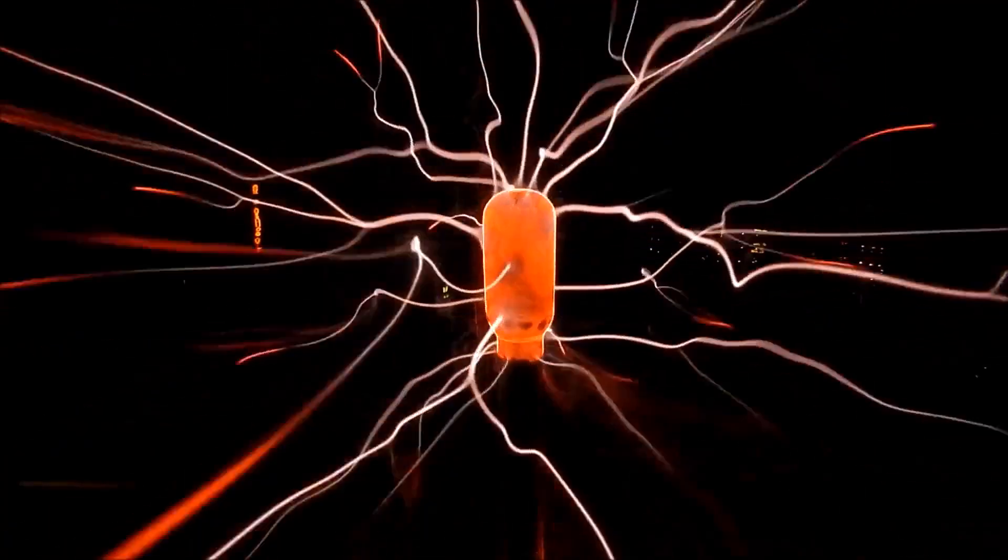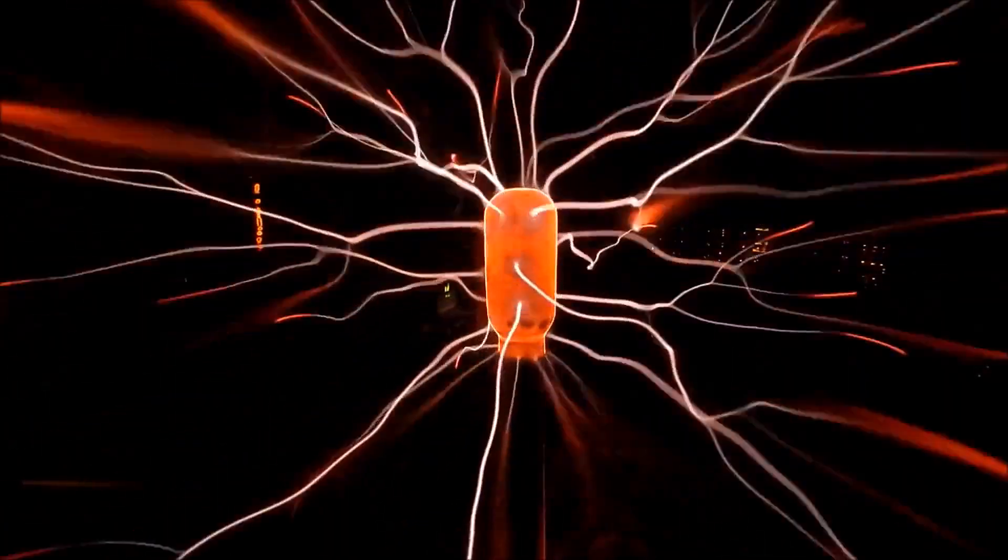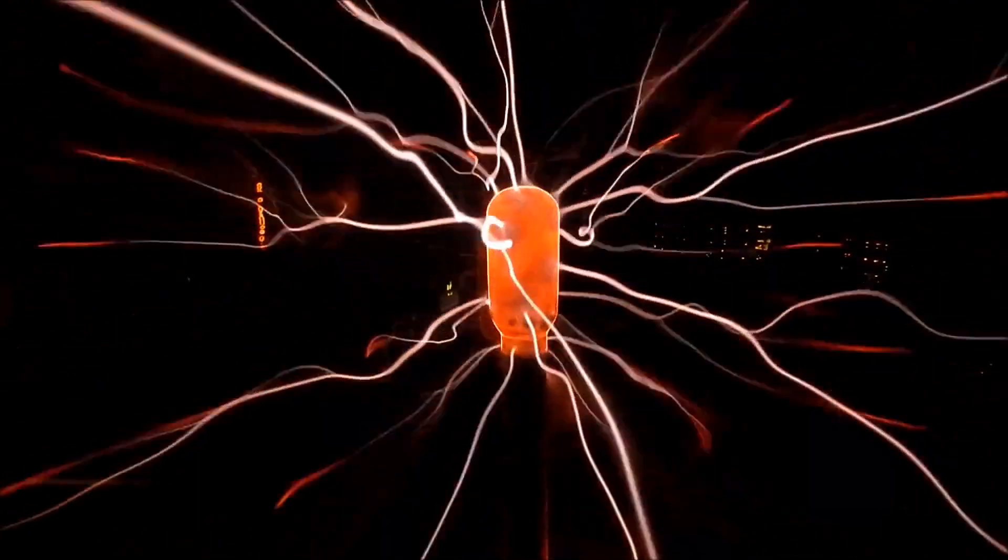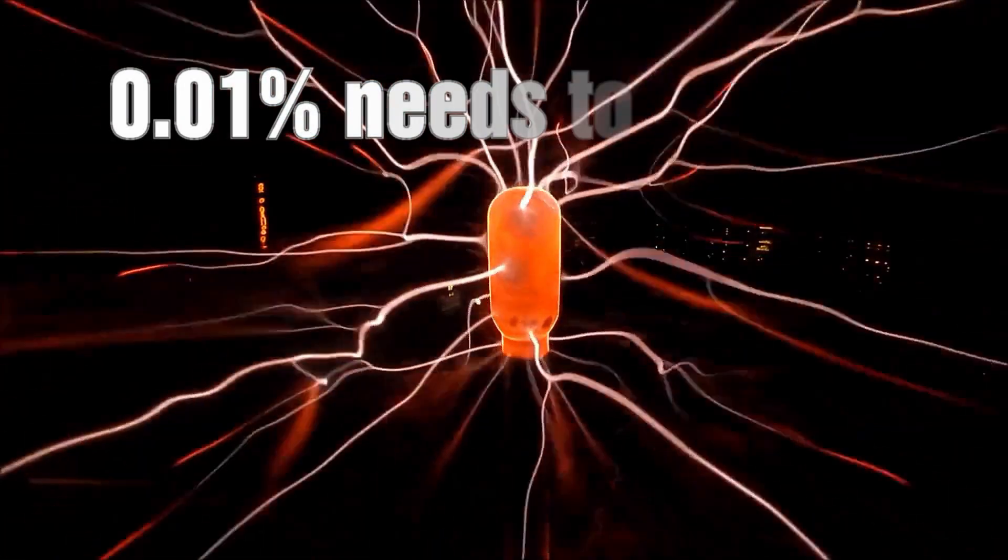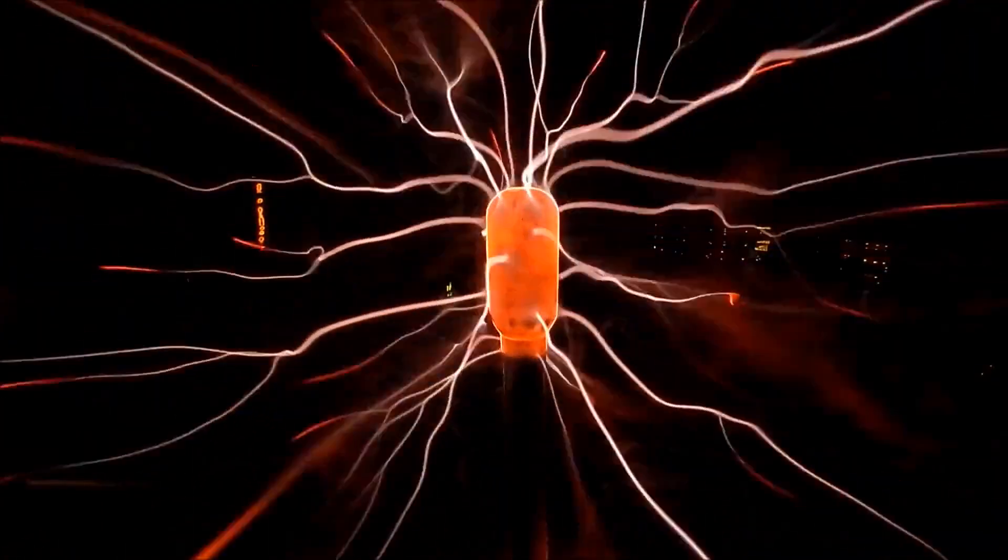So when does a gas become a plasma? For a plasma to exist, ionization must occur. The term plasma density only refers to the electron density, and only a very small fraction of a gas needs to be ionized, around about 0.01%, for it to be able to conduct electricity.